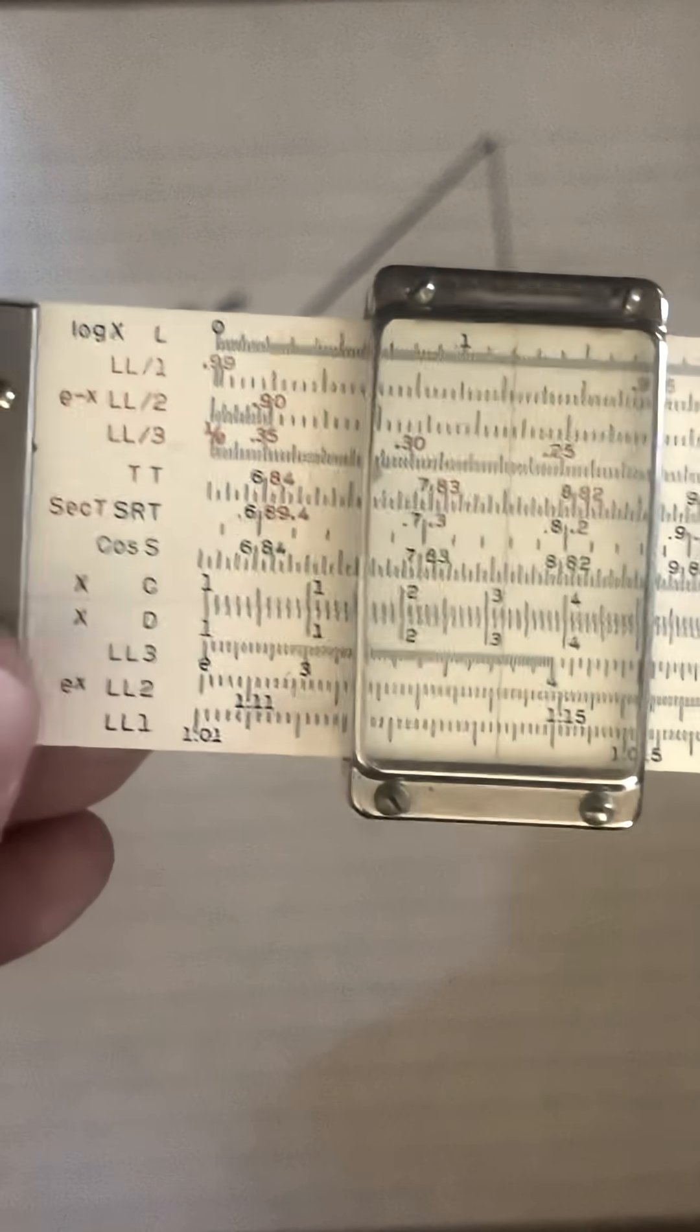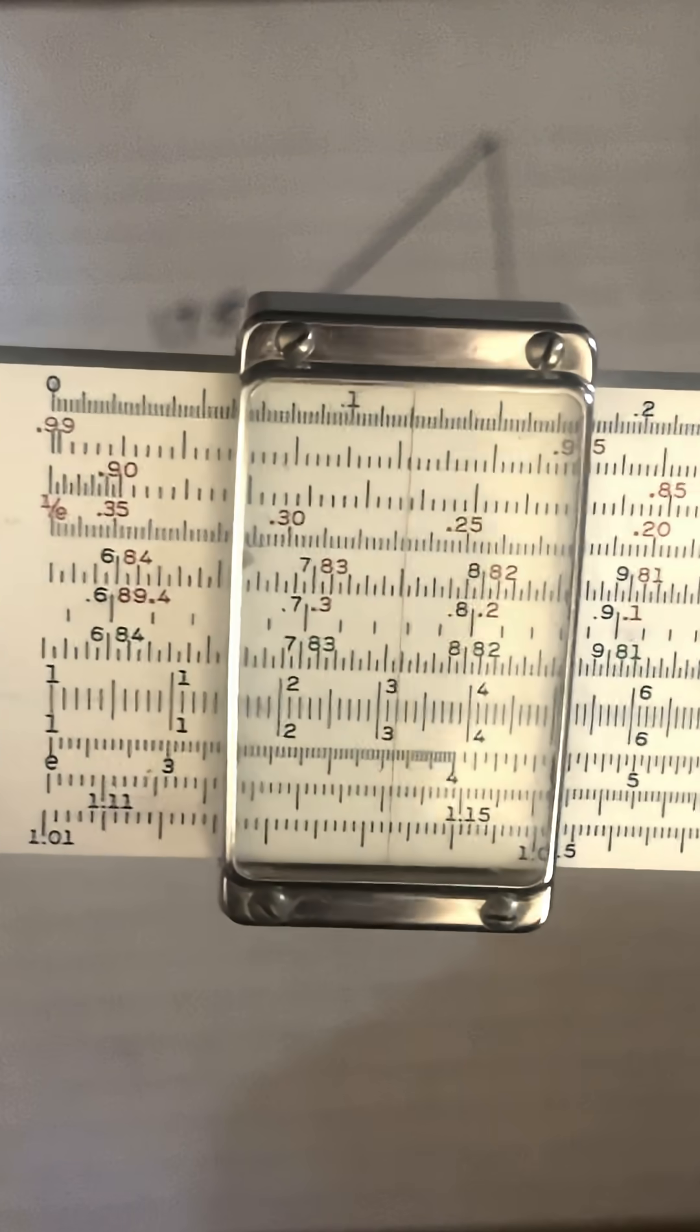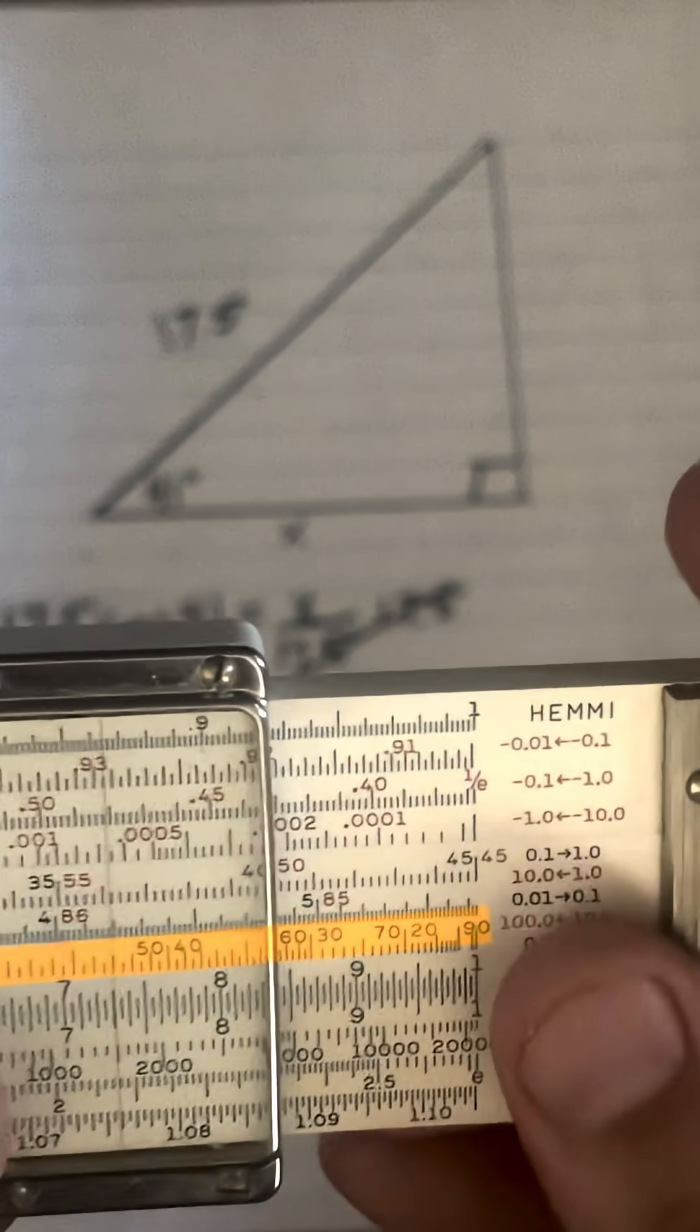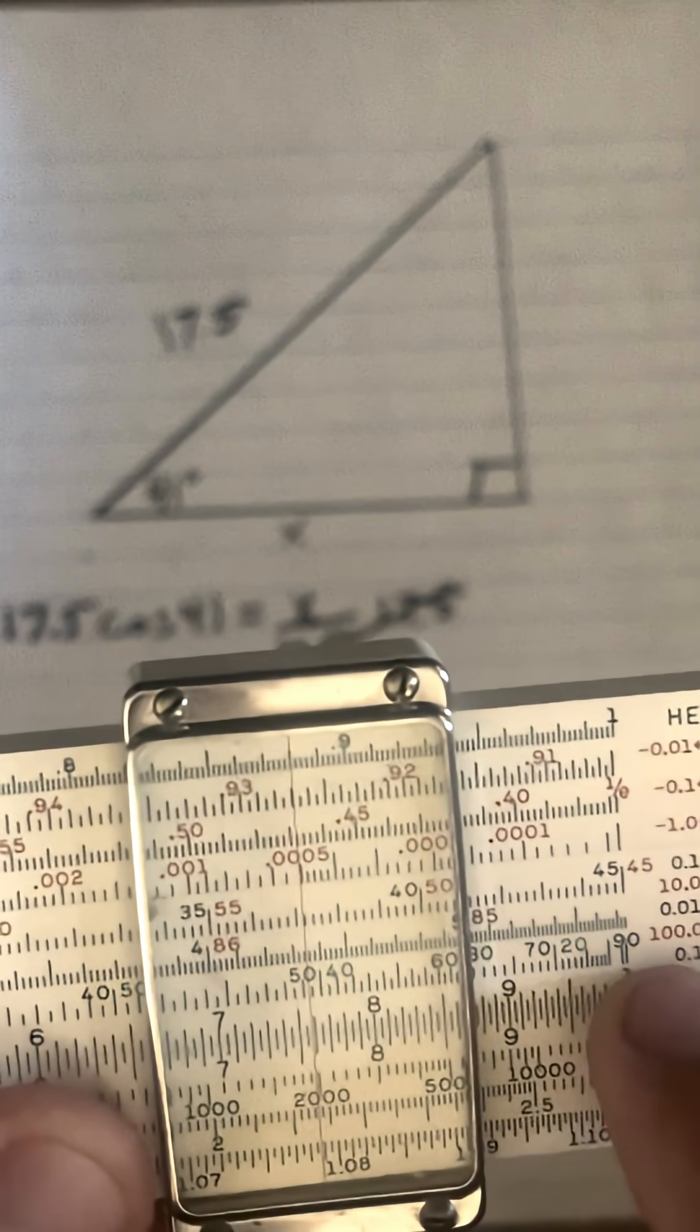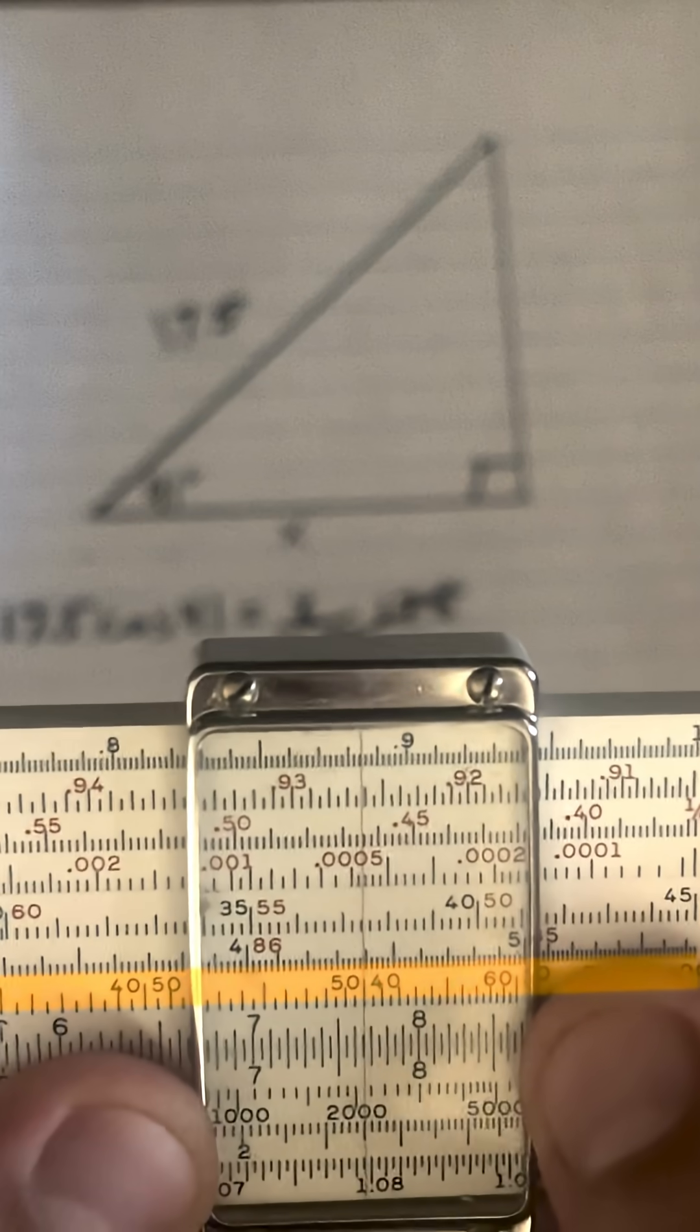We want to start by lining up all our scales to zero, make sure that's accurate, and we'll move over to the cosine scale. Notice cosine is in green on the sine scale but it's going the opposite direction, so we'll find 40 and go over to 41.